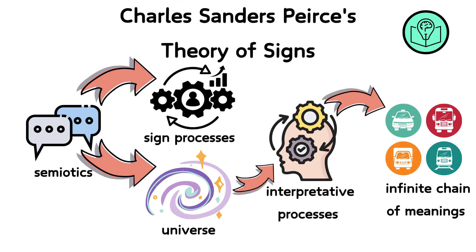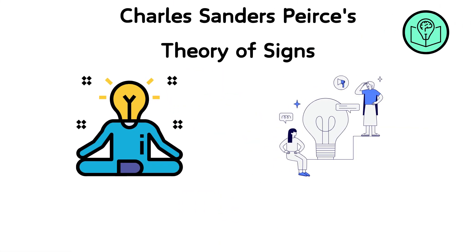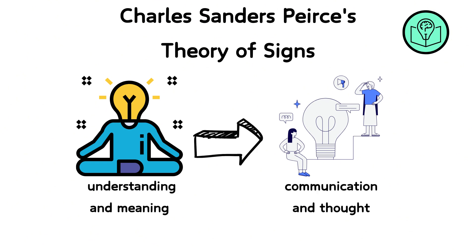This ongoing process of interpretation means that signs are not static but are part of an infinite chain of meanings. Each sign or representation leads to another, creating a dynamic, interconnected web of understanding. Peirce's theory is profound because it suggests that understanding and meaning are not merely about static relationships but are active, ongoing processes that form the core of all communication and thought.